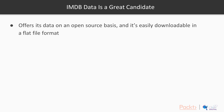The IMDB data files are a great candidate. The Internet Movie Database, if you don't know it, is like Wikipedia for movies and TV shows. It's owned by Amazon, but it's open source and all of its data is available to download for free. The Internet Movie Database offers its data on an open source basis — it's easily downloadable and compressed in a flat file format.